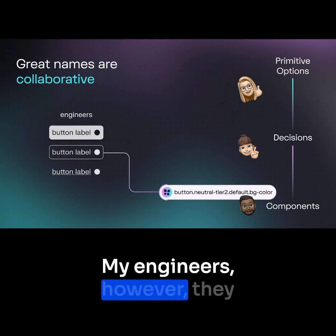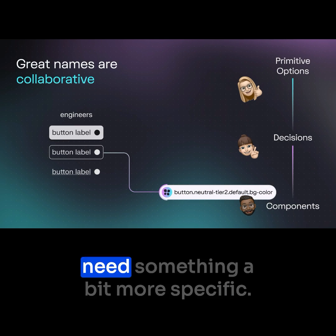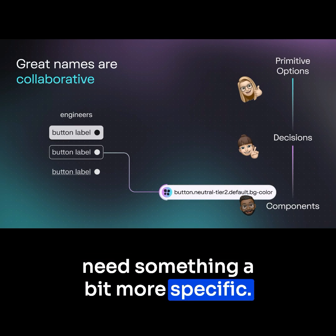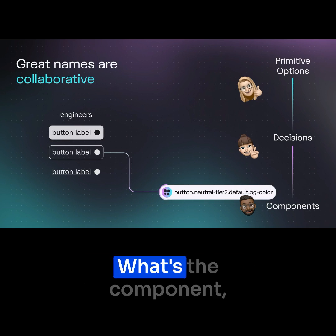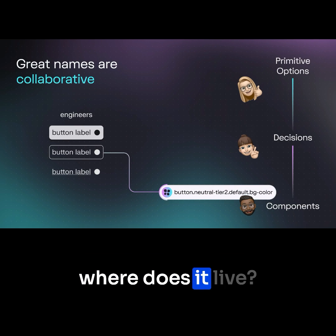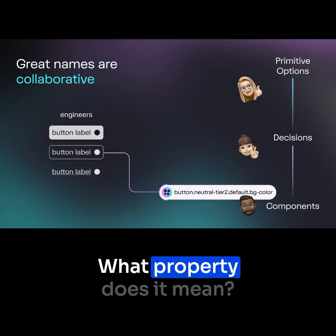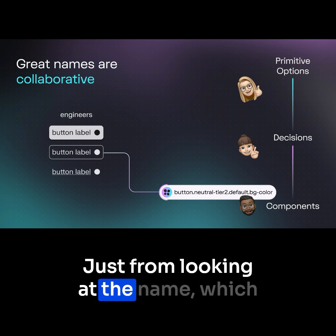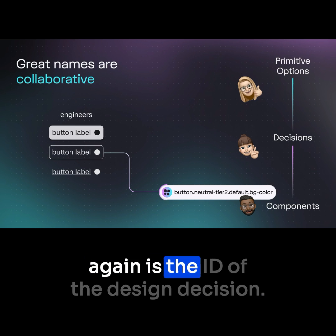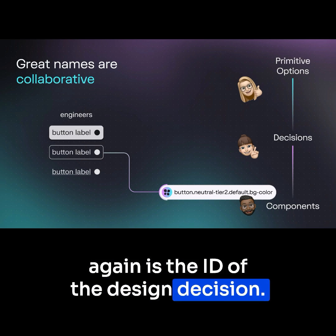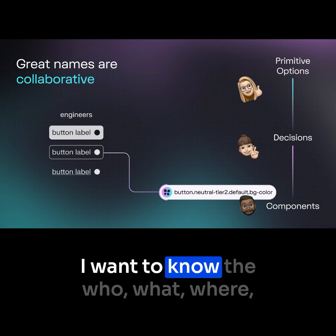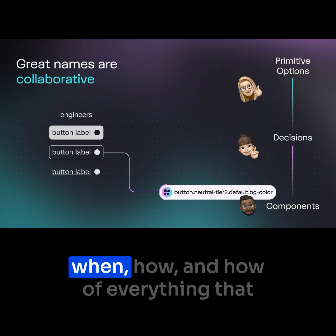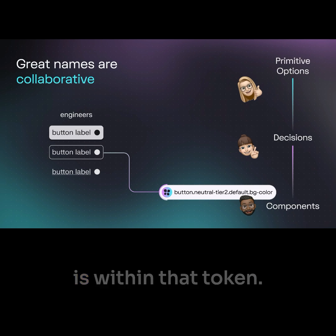My engineers, however, need something a bit more specific. What's the component? Where does it live? What is it doing? What property does it mean? Just from looking at the name, which is the ID of the design decision, I want to know the who, what, where, when, and how of everything that is within that token.